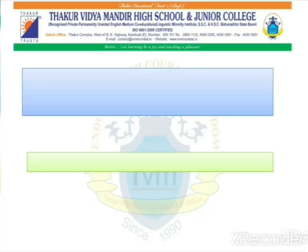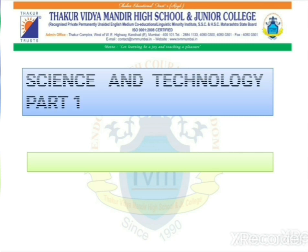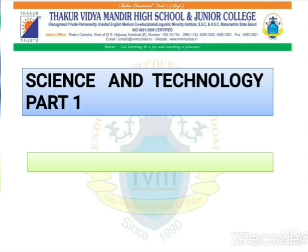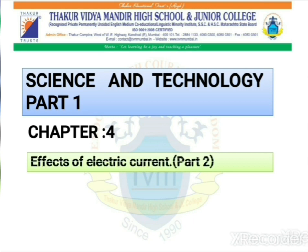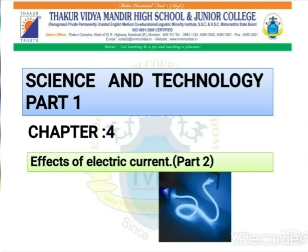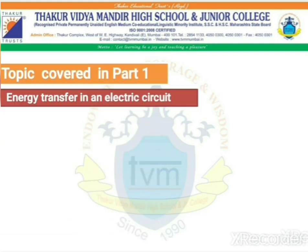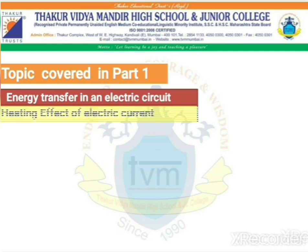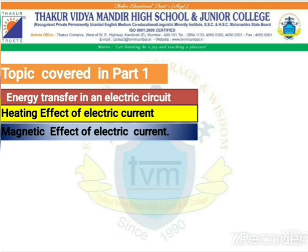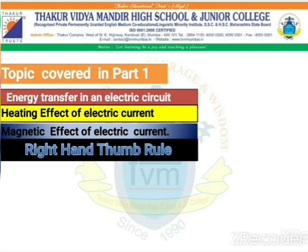Hello students, today we are going to see the chapter from Science and Technology Part 1, Chapter number 4, that is Effects of Electric Current. We have already seen the first part of this topic, where we covered topics like Energy Transfer in an Electric Circuit, Heating Effects of Electric Current, Magnetic Effects of Electric Current, and Right-hand Thumb Rule.